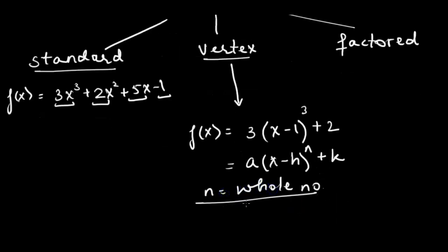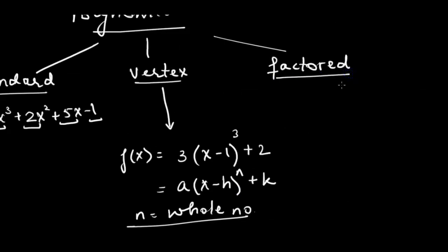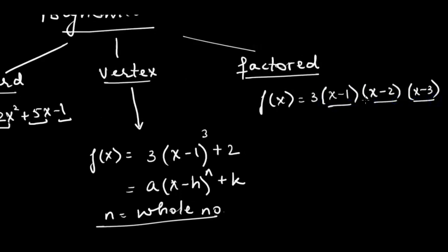The factored form is written as f(x) = a · (bracket)(bracket)..., where brackets are separated by multiplication — not plus or minus signs. This product-of-brackets form is the factored form. Since quadratics are polynomial functions, that is why we learned quadratic functions in standard, vertex, and factored forms.